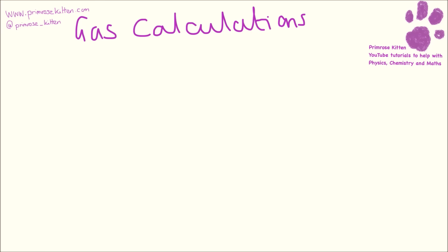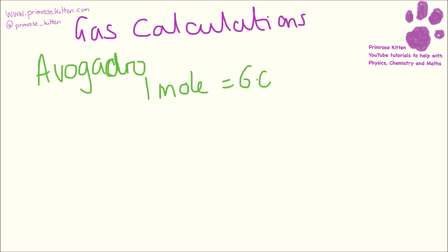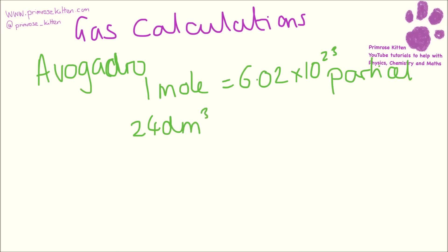For gas calculations, you need to know about Avogadro's constant, which says that one mole is going to have 6.02 × 10²³ particles in it, and that is going to take up 24 decimetres cubed of space. To work out the number of moles, we do moles equals mass in grams divided by the Mr. And then you can just take the number of moles and multiply it by 24. There are loads of practice calculations for this in my chemistry book.